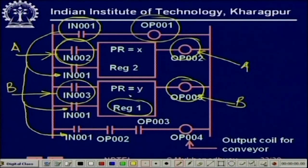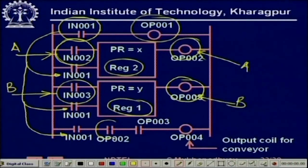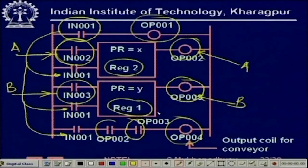The registers are incremented, not the outputs directly. When both registers cross their preset values, the outputs go high. Since they are placed in series, both must reach their preset count values before the conveyor will run. If you put them in parallel, it means that if any one of them reaches its preset value, the conveyor will run.